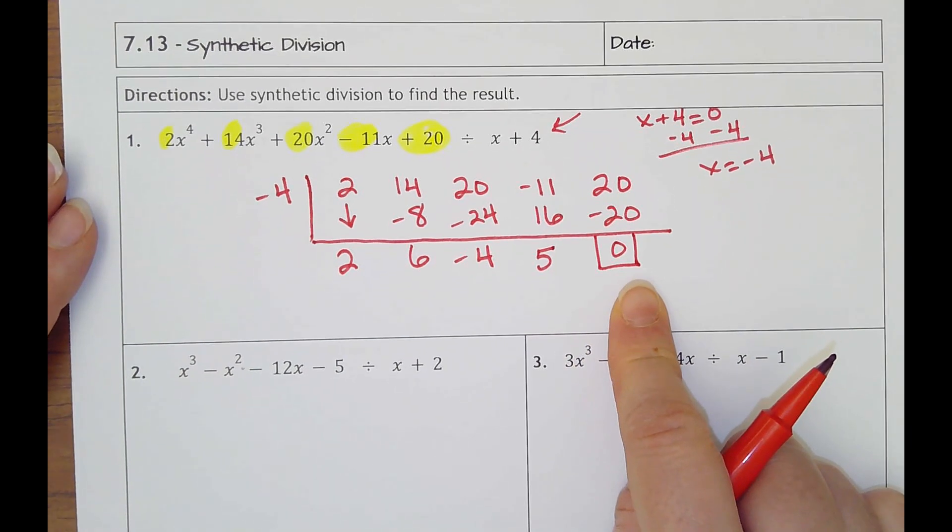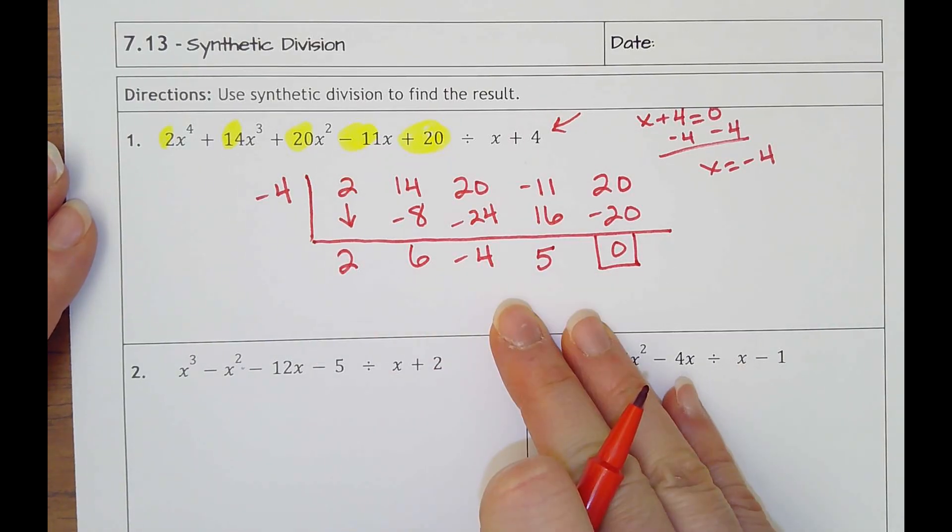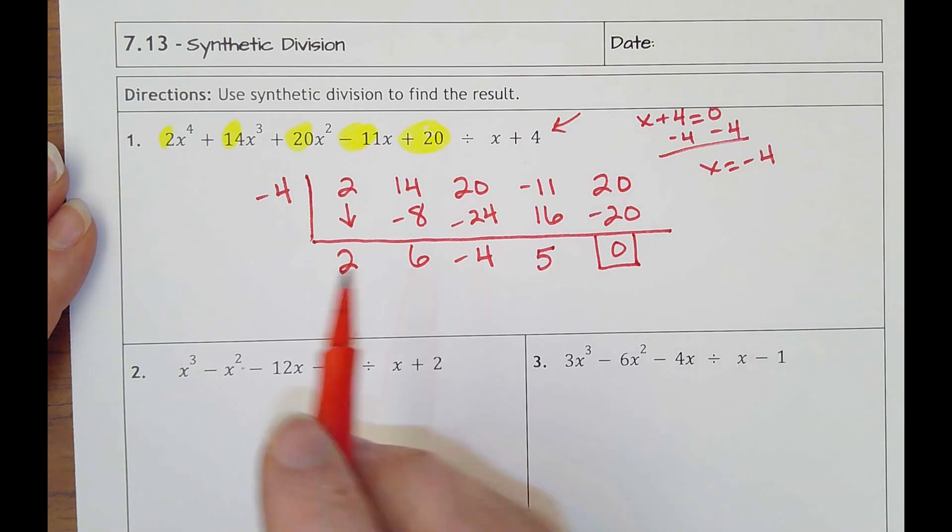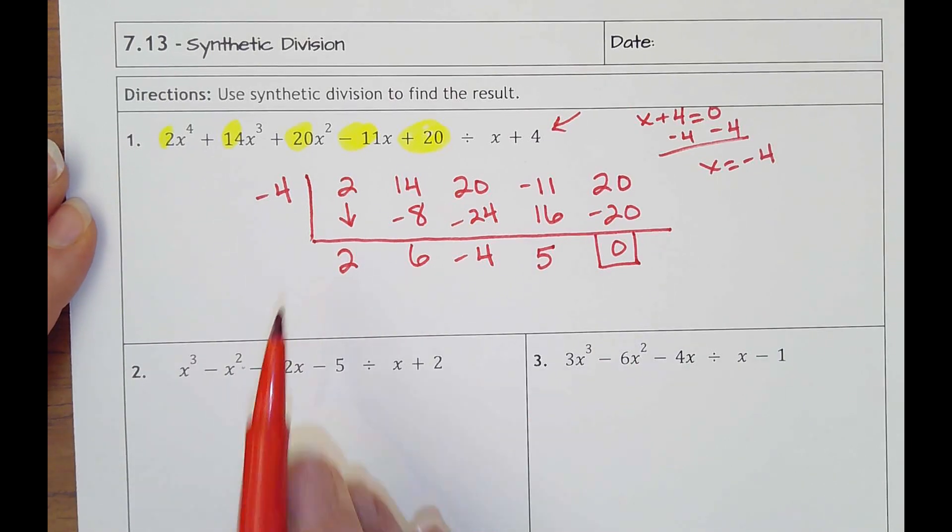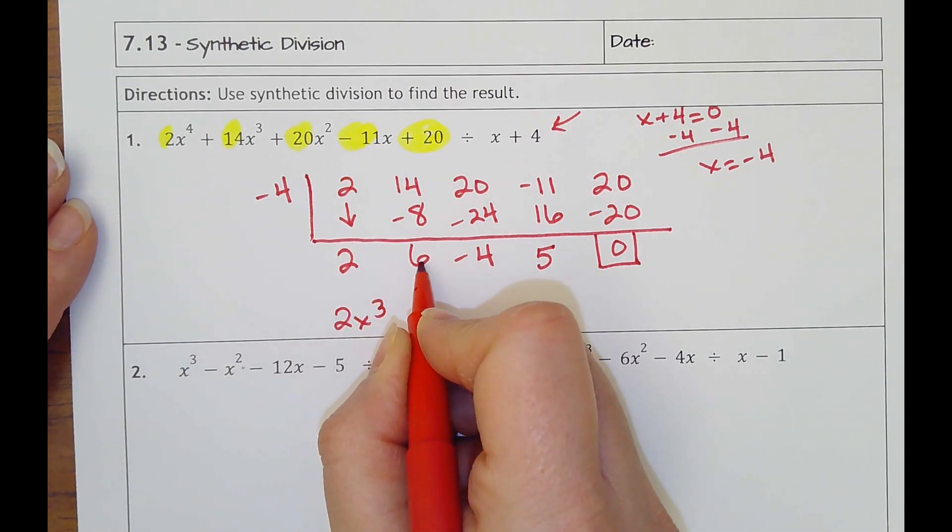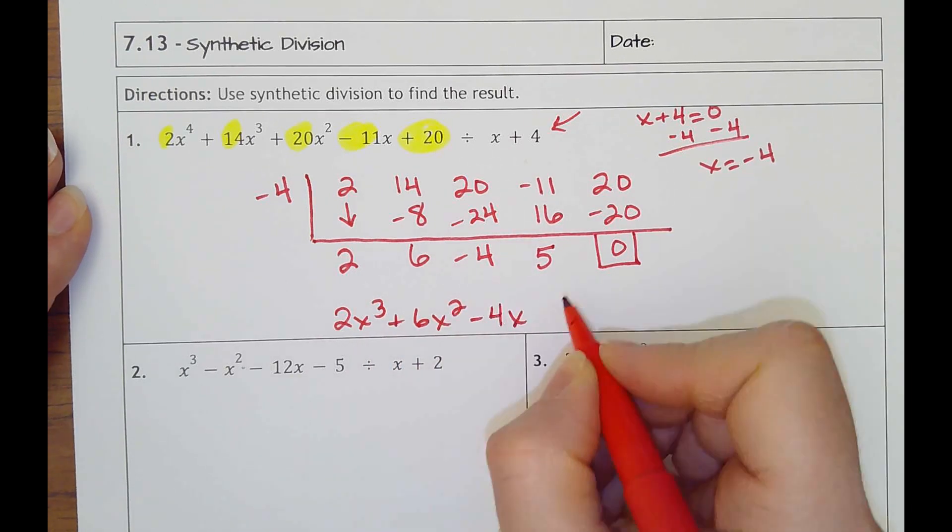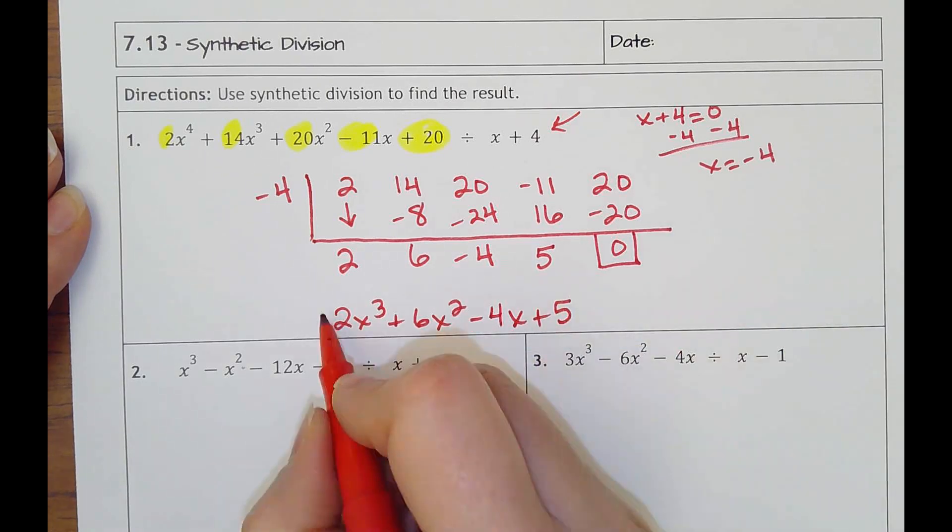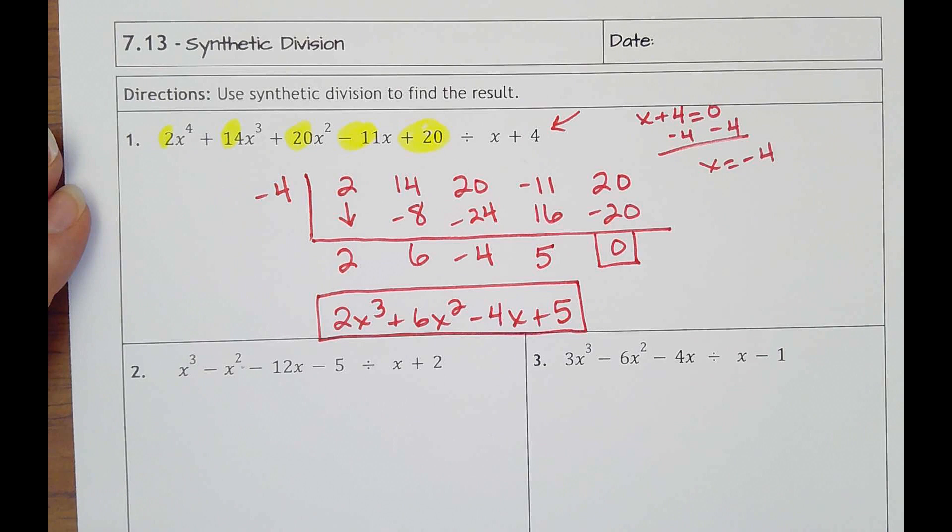The last number is always your remainder, so I put a little box there. Then you're thinking, well how do I write my answer? You're going to drop down a power. Since this was x to the fourth, this is now 2x cubed, then positive 6x squared, then minus 4x, and plus 5 with no remainder. That's the answer.